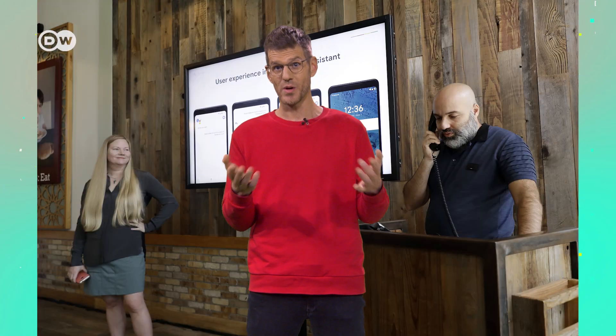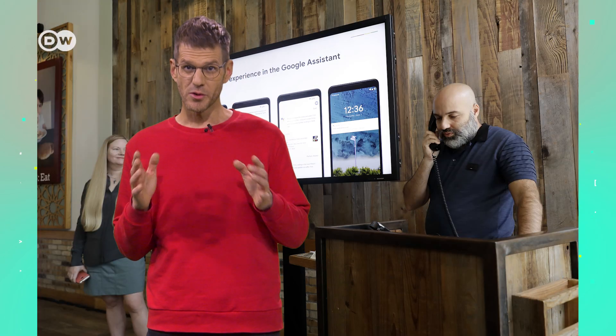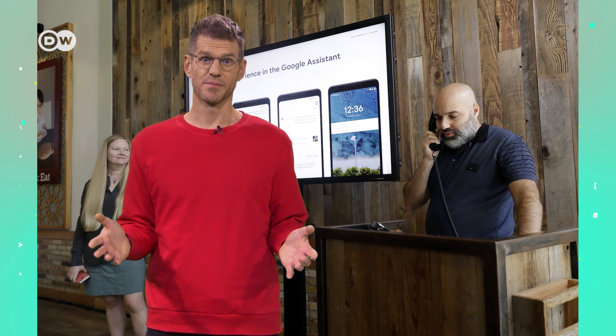In May 2018, Google presented its AI telephone Duplex. Duplex can make automated phone calls. During the presentation, the system made a reservation at a restaurant. The waiter did not notice that he was talking to a machine. It is being debated whether Duplex passed the Turing test or not.